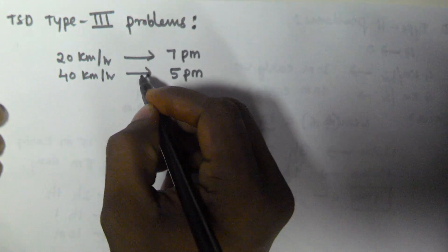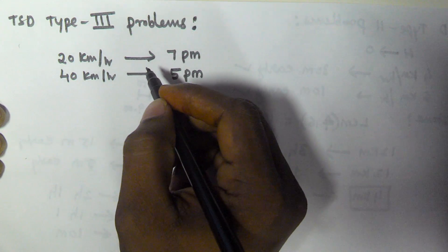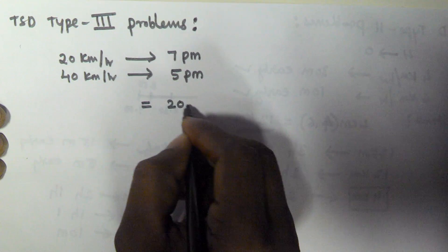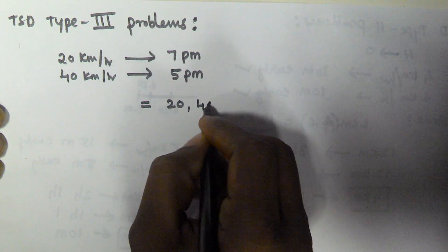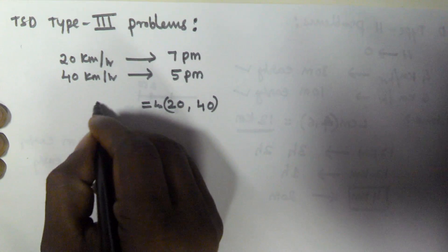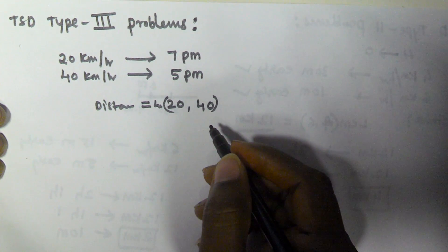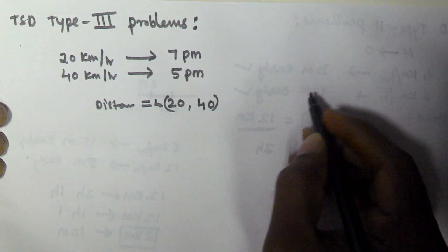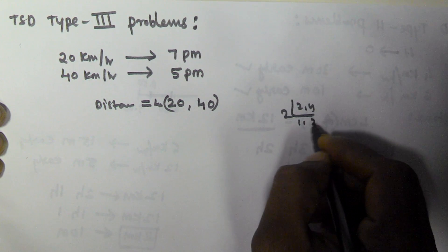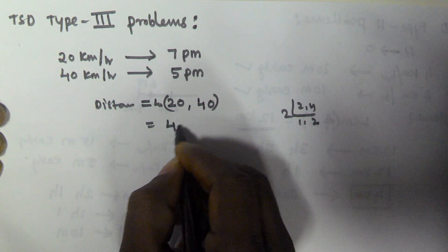In both cases the distance is constant. That is why I am taking the distance as the LCM of both speeds, which are 20 and 40. The LCM of 20 and 40 is 40. So the distance we are assuming is 40 km.